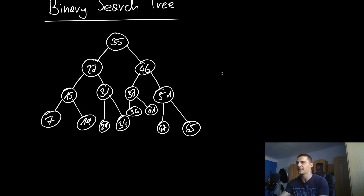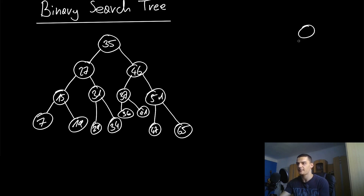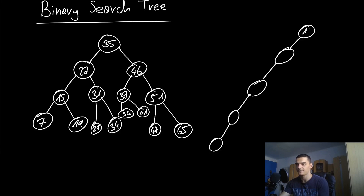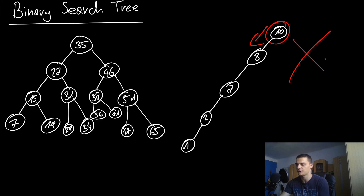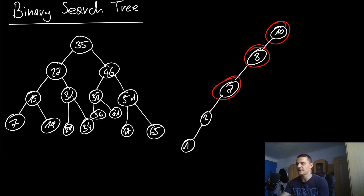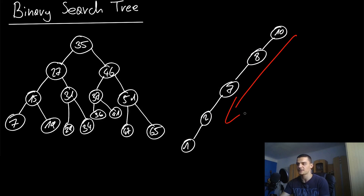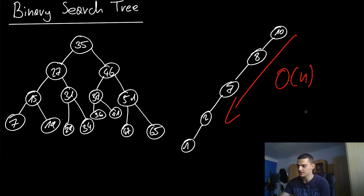The problem is we're not always going to have a balanced binary search tree. Sometimes the tree could look like a path: 10, 8, 7, 2, 1, all going left. If you're looking for 1, you look at 10 and go left, but there's nothing to ignore — you're not halving the problem size. You go through 8, 7, 2, 1 without excluding any elements. This is essentially a linear process, giving you linear runtime complexity.